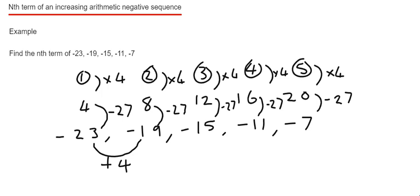So our rule then is to multiply the number at the top by 4 and then take away 27. So if this number at the top is n, we times it by 4, which is 4n, and then subtract 27. And that is our final answer. So make sure you like and subscribe. See you next time.